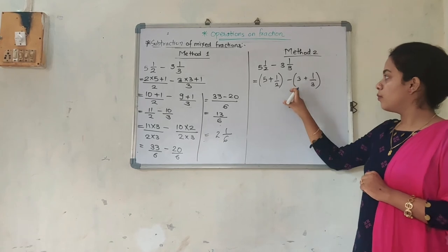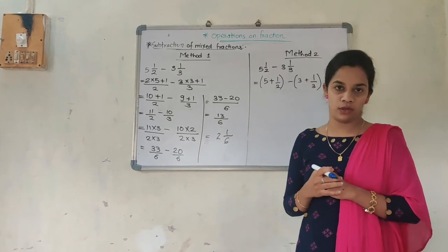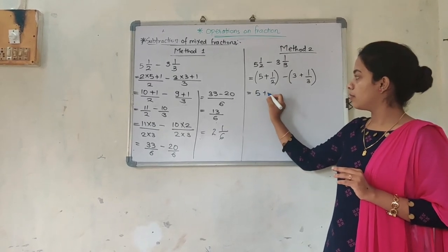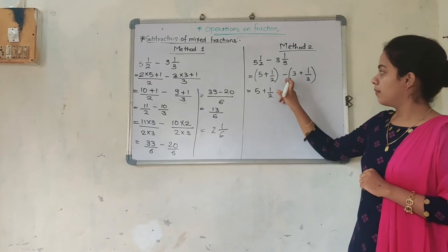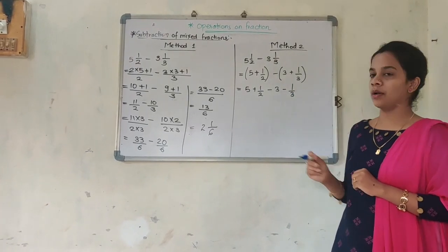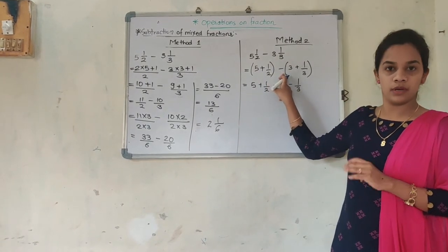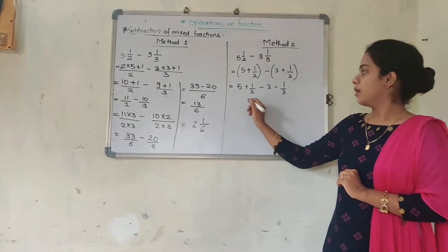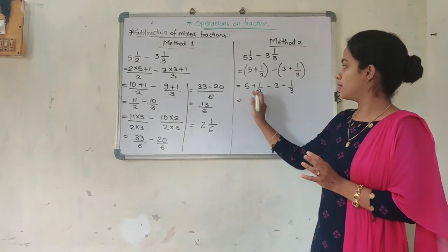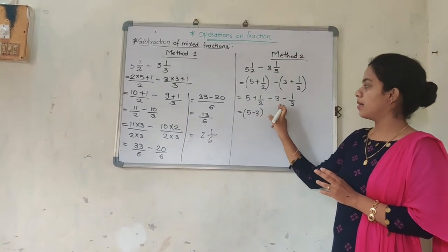Whenever there is a minus sign outside a bracket, when the bracket opens, the signs inside change. So if I open the bracket: 5 plus 1/2 remains as it is, but 3 becomes minus 3 and plus 1/3 becomes minus 1/3. The reason is: whenever brackets open, the signs inside change because there is a minus outside. For addition, there is no change in sign. Now I take the integer parts together: 5 minus 3, and the fractional parts together: plus 1/2 minus 1/3.